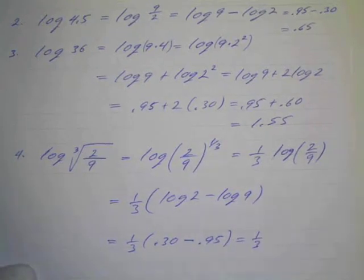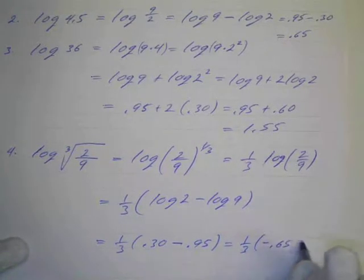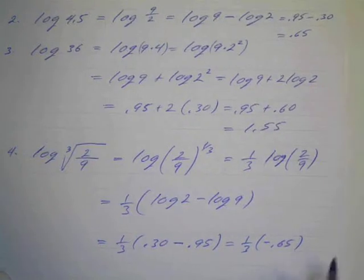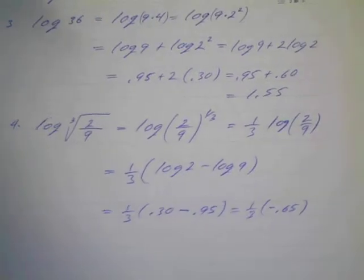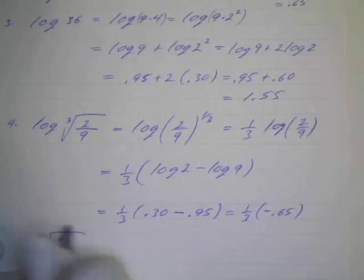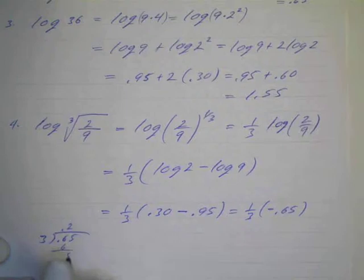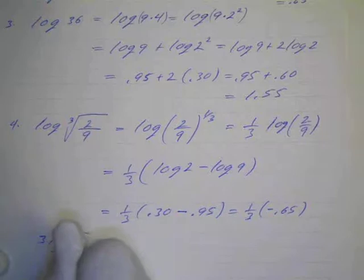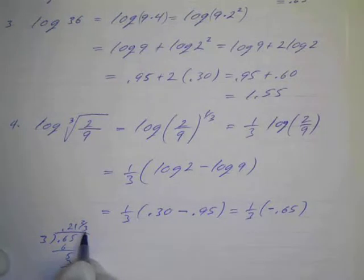That ends up being equal to one-third, and that's going to be negative 0.65. And so we just have to divide 0.65 by 3 and that way we can evaluate it out. So if we don't have a calculator we could just do it the old-fashioned way: 3 divided into 0.65. 3 goes into 6 twice, 2 times 3 is 6, bring down your 5, and 3 goes in there once which is 3.